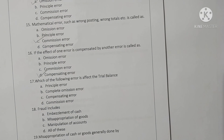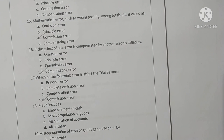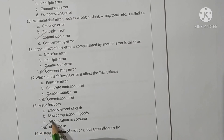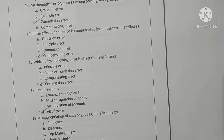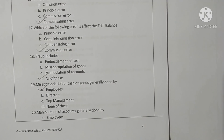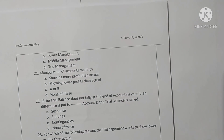Which of the following errors affects the trial balance? Commission error affects the trial balance — option D is correct. Question 18: Fraud means embezzlement of cash, misappropriation of goods, manipulation of accounts, and all of these — option D is correct. Misappropriation of cash or goods is generally done by employees — option A is correct. Manipulation of accounts is generally done by top management — option D is correct.